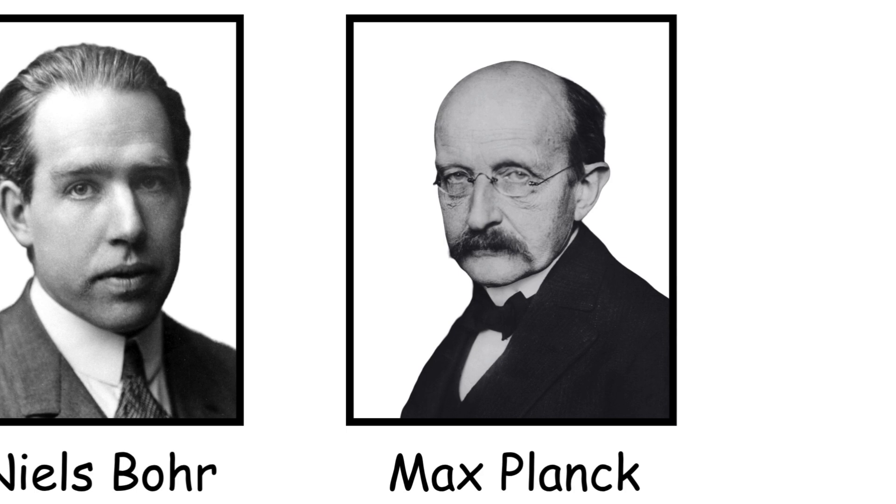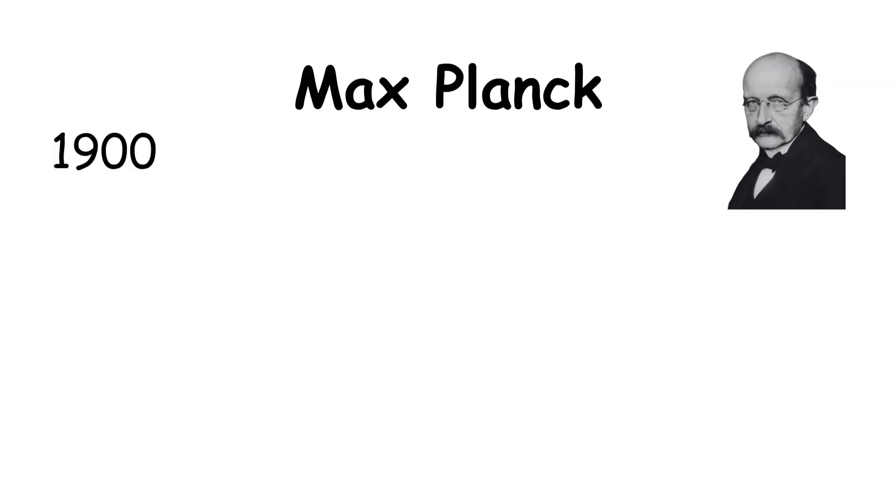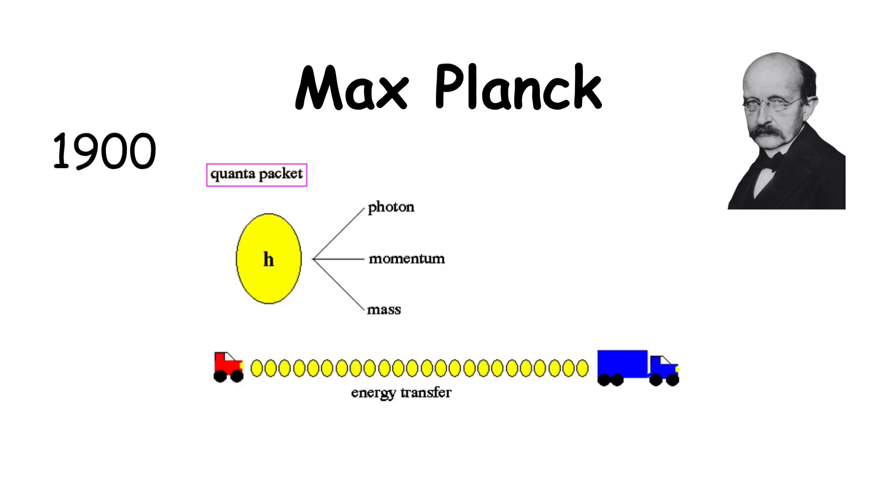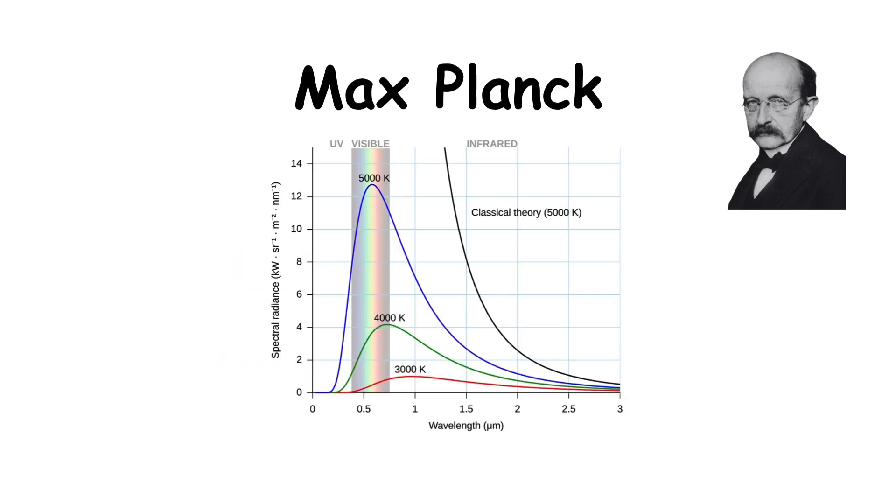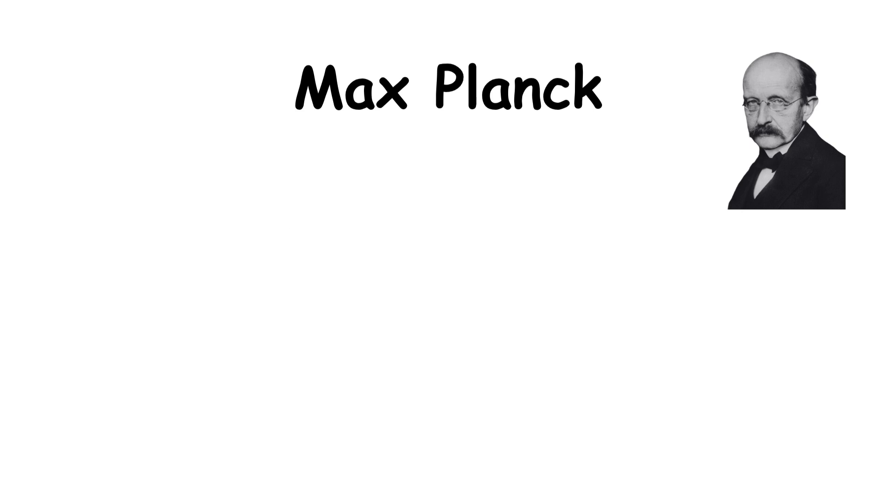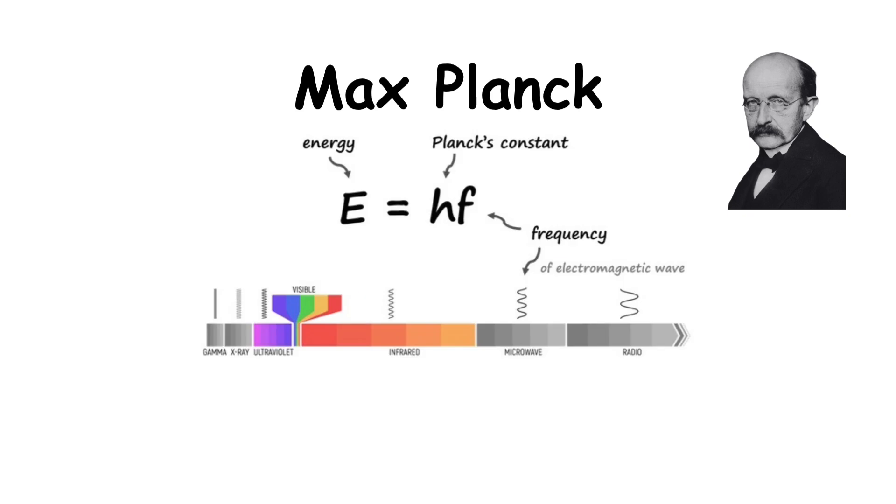Max Planck. In 1900, he introduced the idea that energy is not continuous but comes in small packets called quanta. To solve a problem in black body radiation, he proposed that energy could only be emitted or absorbed in discrete amounts, E equals H times F, where H is now called Planck's constant.